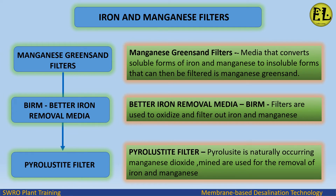Types of filters include: manganese greensand filters, which provide better iron removal — the IRM filters are used to oxidize and filter out iron and manganese — and pyrolusite filters. Pyrolusite is naturally occurring manganese dioxide, which is mined and used for the removal of iron and manganese.